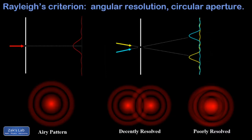In this video we discuss the diffraction of light through a circular aperture and Rayleigh's criterion for determining the smallest angular size that can be resolved given the diameter of the aperture and the wavelength of the light.